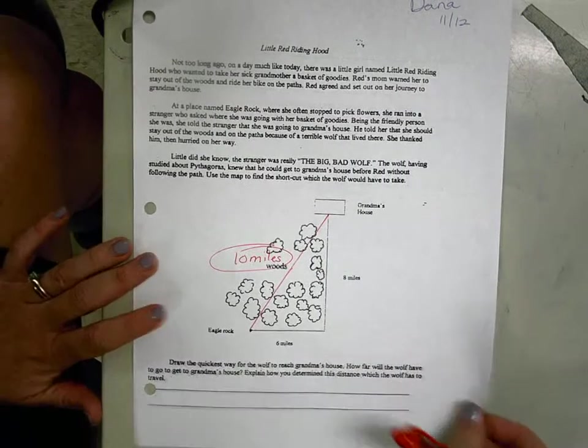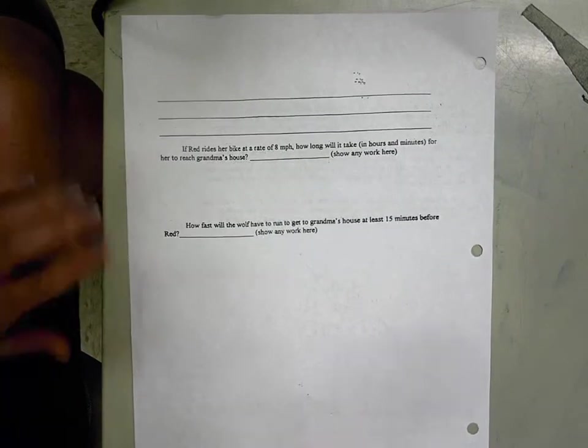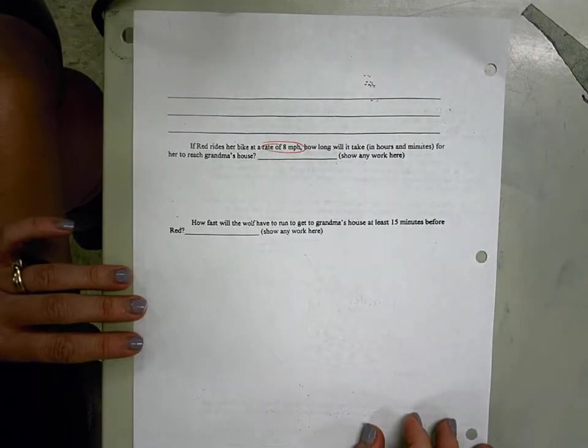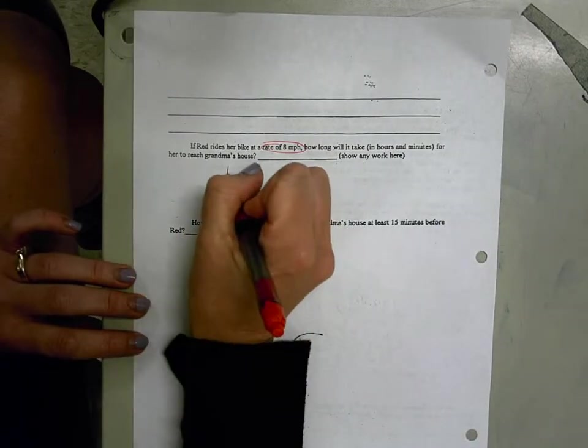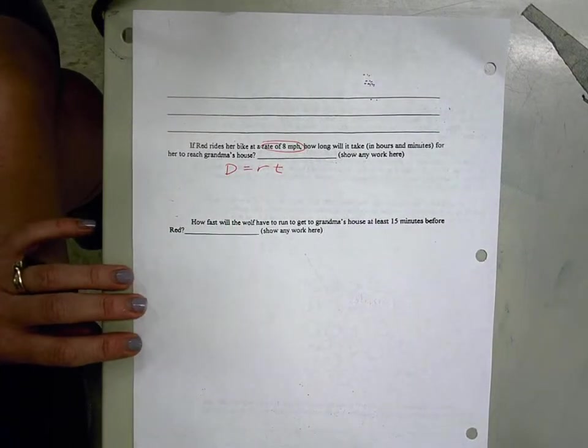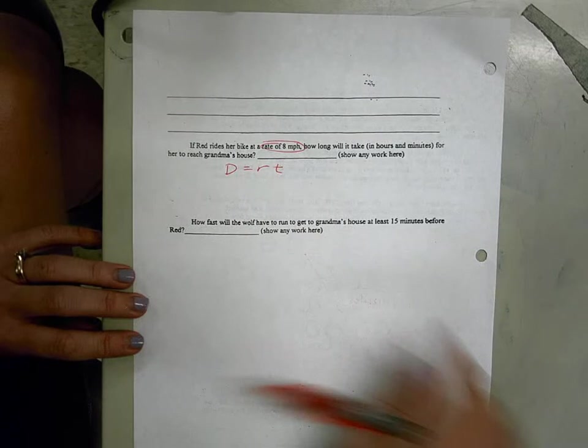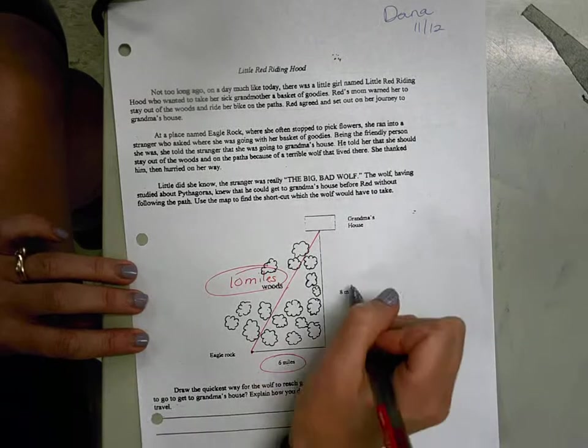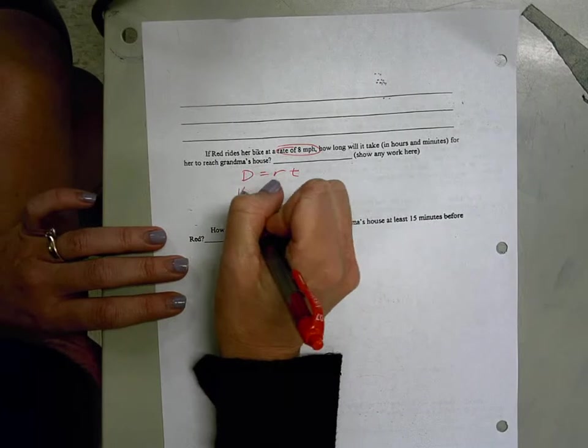The issue a lot of students had was on the back. If Red rides her bike at a rate of 8 miles per hour, how long will it take in hours and minutes for her to reach Grandma's house? So this is using that simple distance formula, where distance equals rate times time. Her distance, we did have to look back to the front. She's going to go on the two legs, so she's going to go 6 miles and then another 8 miles for a total of 14 miles.